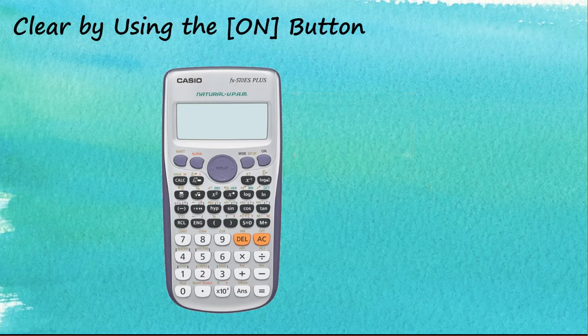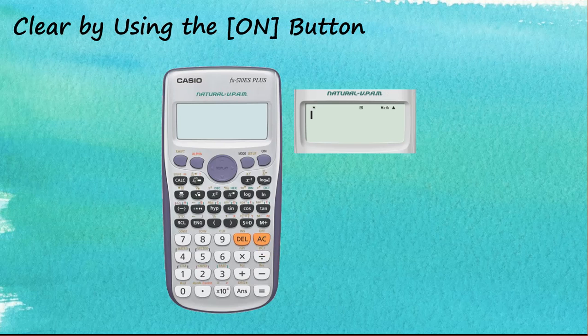Some users realize that they can also use the ON button to clear the screen. So what's the difference between using the ON button and all clear button? Now your calculator is a very sophisticated calculator. It records your calculation each time when you tap on this equal key and then puts it into the history.